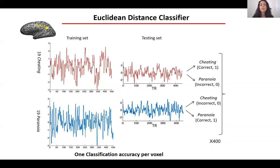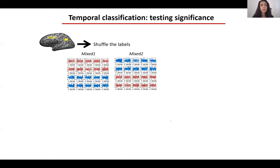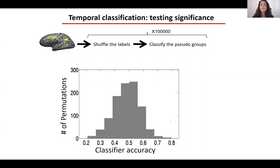To test whether this accuracy value is significant, we generated a null distribution for the classification accuracy. We did so by extracting the data in every specific voxel or region of interest, shuffling the labels to create two pseudo-groups containing participants from both the cheating and paranoia groups, and classifying each pseudo-group using the same algorithm. We repeated this 100,000 times to generate a null distribution, then tested where the real data falls in this null distribution, calculating the p-value and correcting for multiple comparisons.